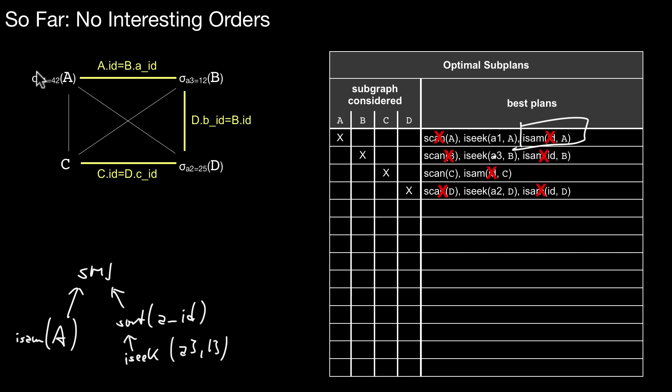Of course whether the optimizer picks this plan or not can only be decided by looking at the concrete selectivities. Here we also have a filter condition. Maybe a similar thing as we are doing here on the right side might make sense on the left side as well. But that depends on the concrete selectivities. The point I'm trying to make here is that this sorting here could be exploited by looking at plans combining two inputs. So this is a plan combining A and B.